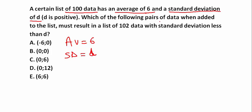So which of the following pairs of data when added to the list must result in a list of 102 data with standard deviation less than d?